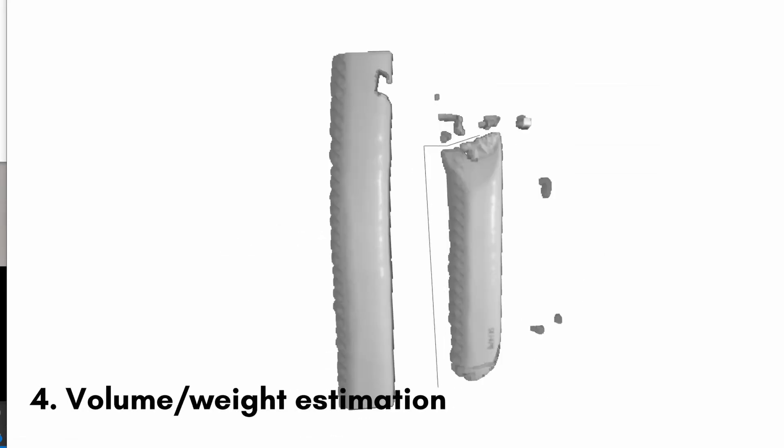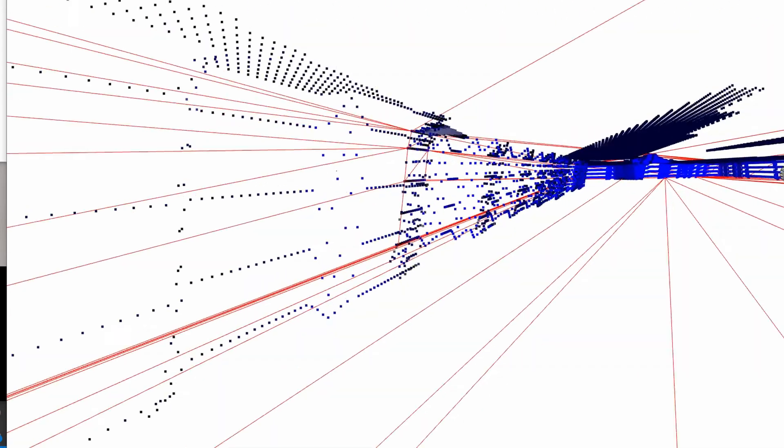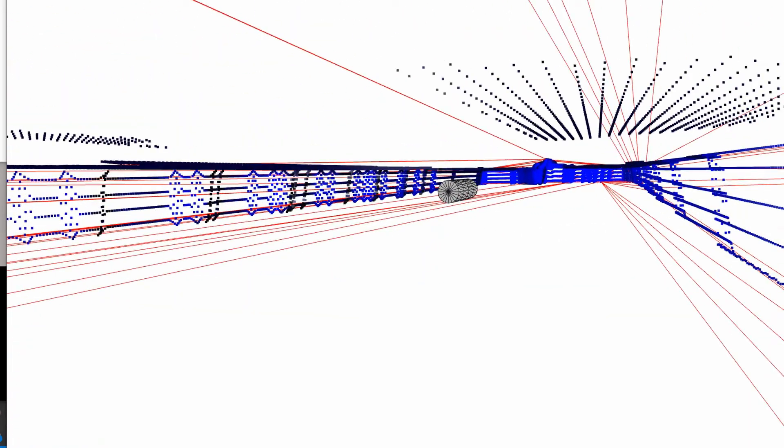Finally, the relevant silo bag is chosen and volume and weight estimation takes place. The weight is estimated using a volume to weight conversion based on the specific grain's density. An estimation accuracy of about 90% was achieved on a full-scale silo bag.